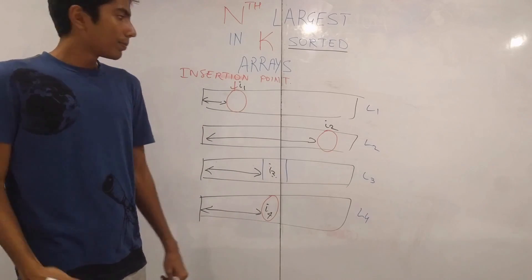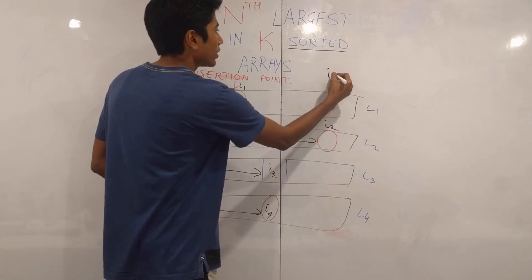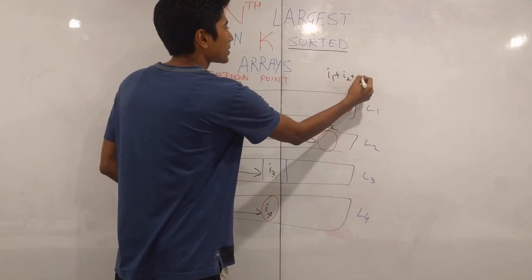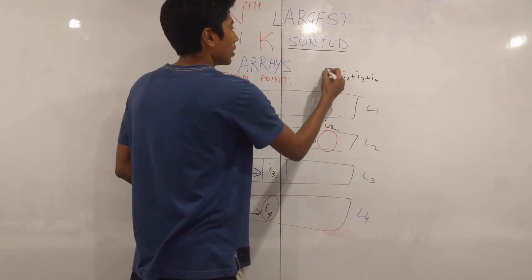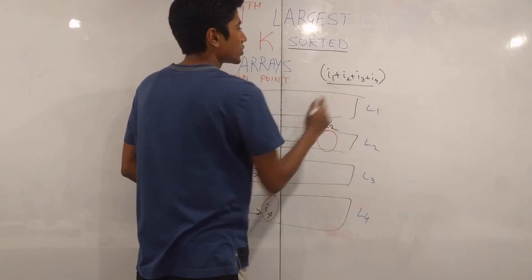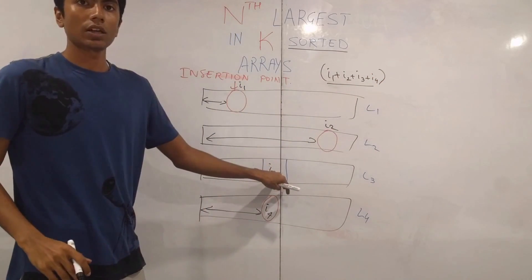If we sum them all out, then we get i1 plus i2 plus i3 plus i4 as the number of elements which are less than this given element.